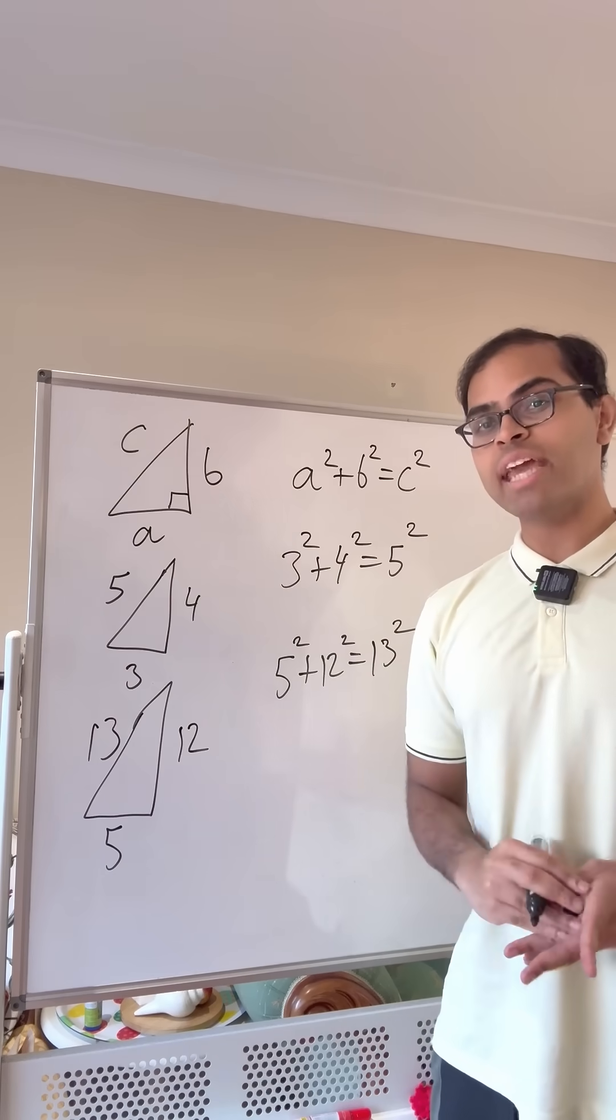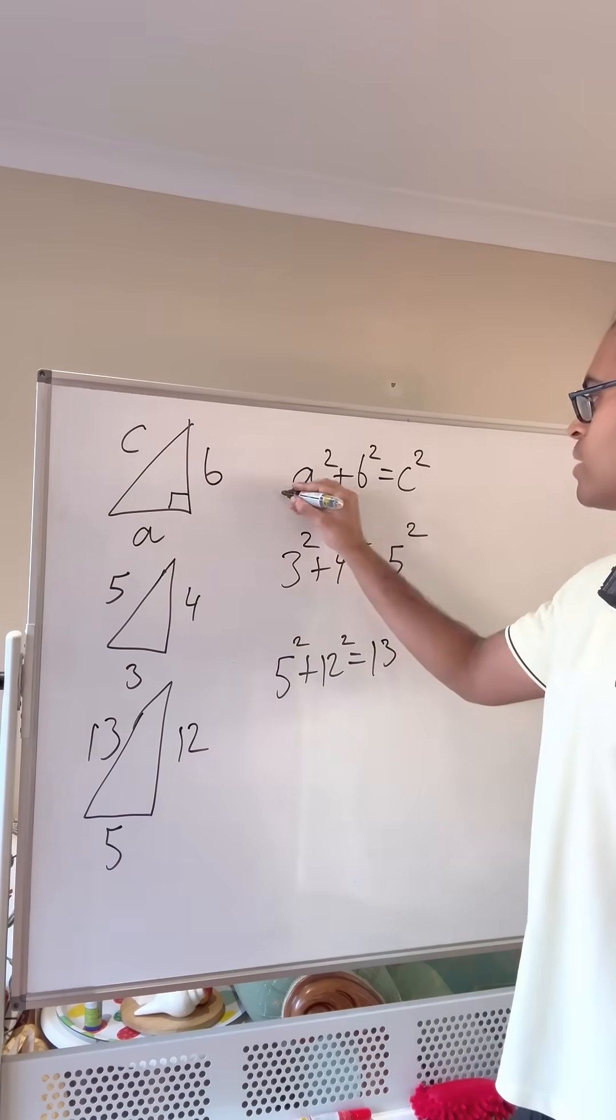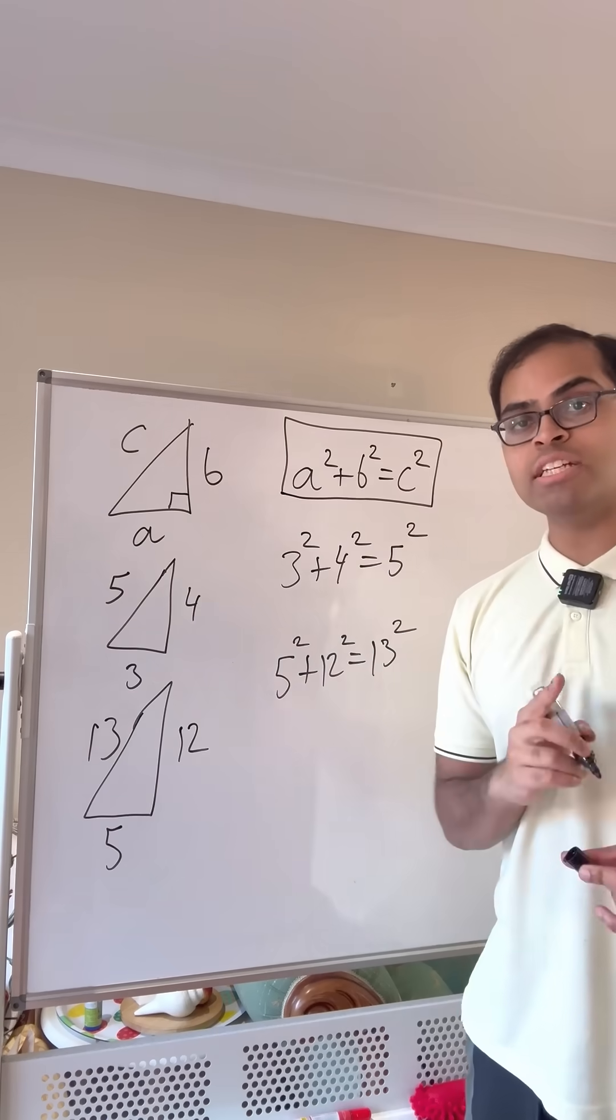What are all the Pythagorean triples? Can you solve this equation a squared plus b squared equals c squared and find all integer solutions?